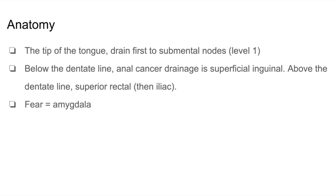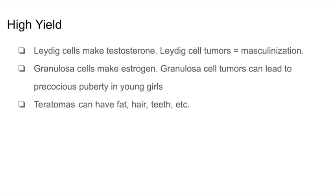Ovarian tumors are also extremely high yield. Leydig cells make testosterone, so a Leydig cell tumor can cause masculinization. Granulosa cells make estrogen, and granulosa cell tumors can lead to precocious puberty in young girls. Teratomas look extremely unusual — they can contain teeth, hair, fat, and other tissue types.